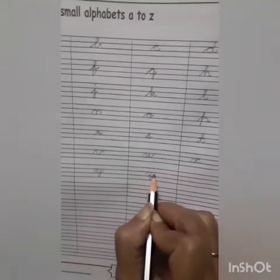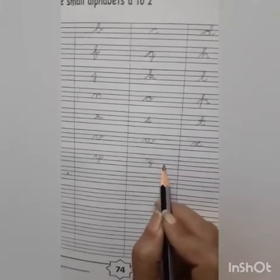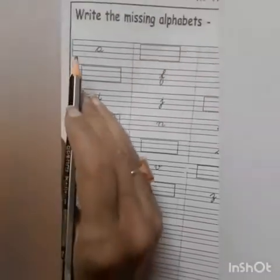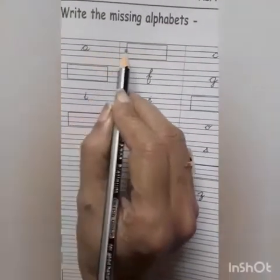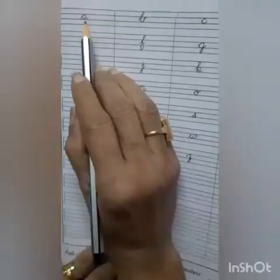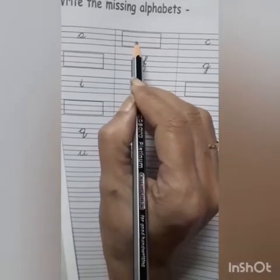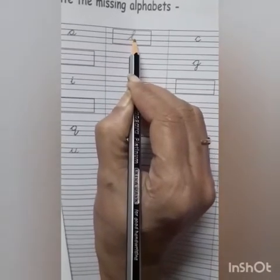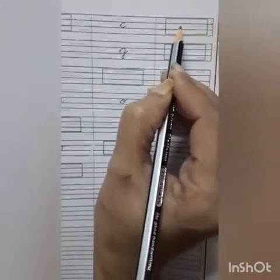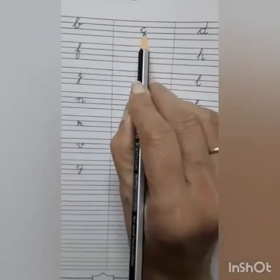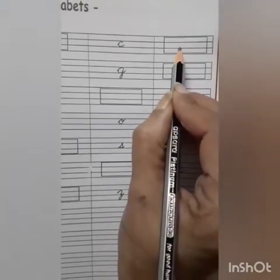Now children, come to press number 71. We will write the missing alphabets. A — then which alphabet is missing? A, B. So B is missing. Write B. Then C — which alphabet is missing? C, D. D is missing. Write D.